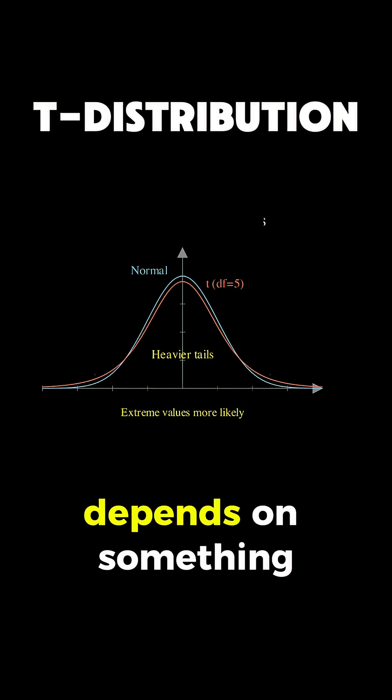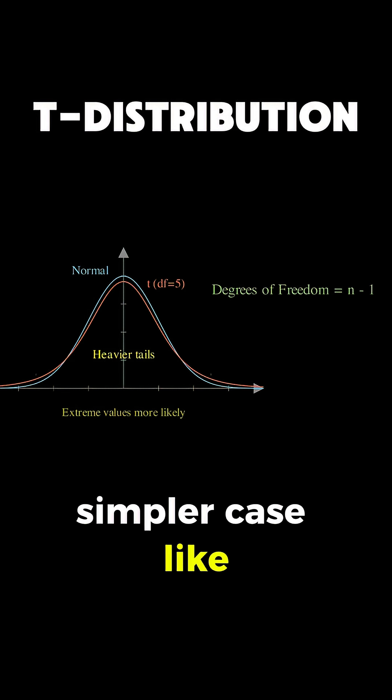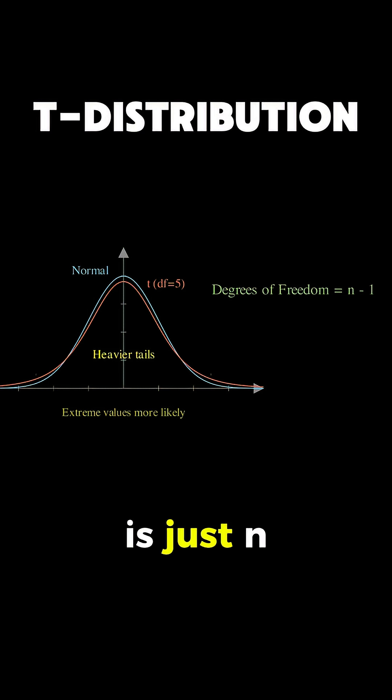The shape of the t-distribution depends on something called degrees of freedom, which for a simpler case like estimating a mean, is just n-1, where n is our sample size.